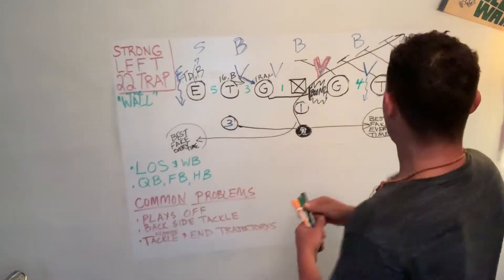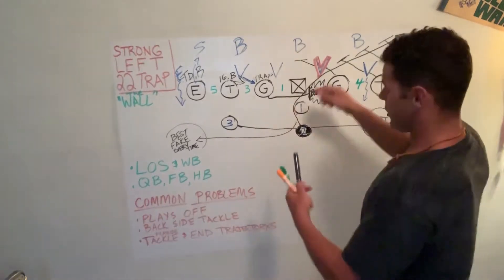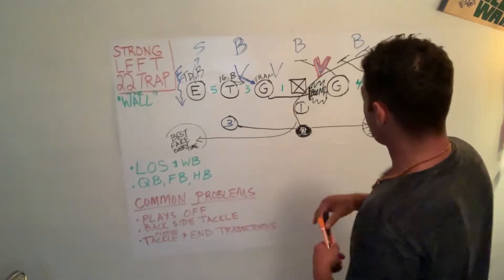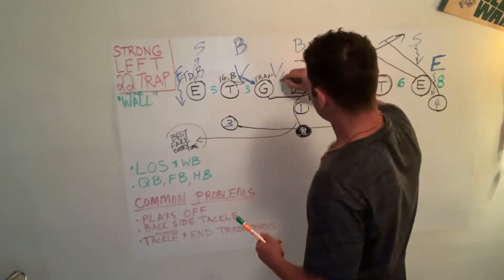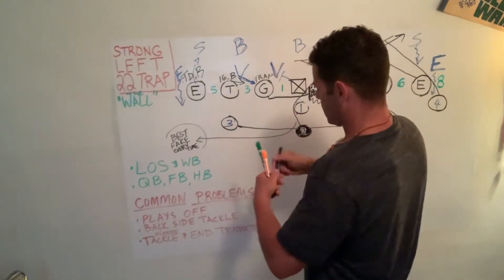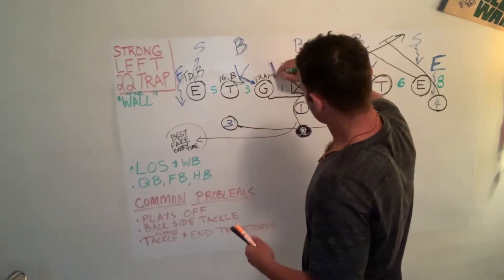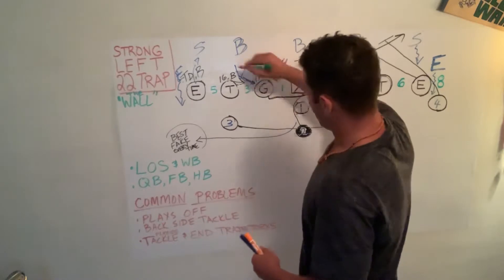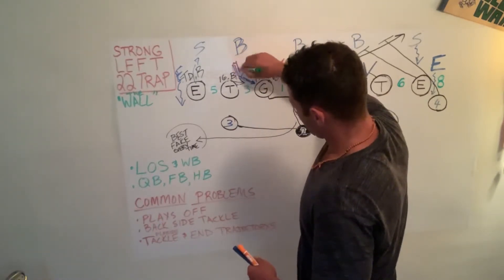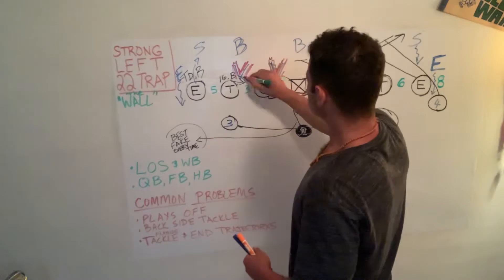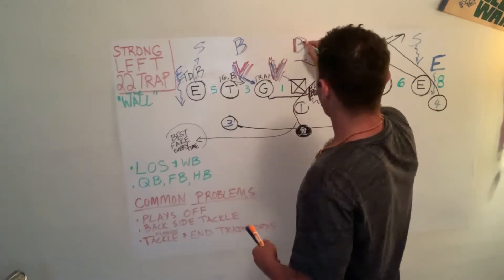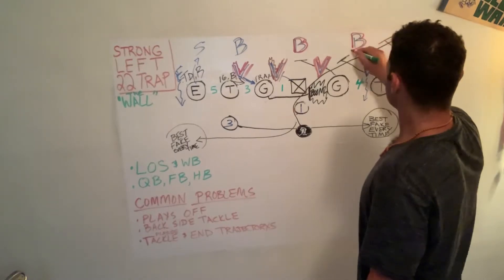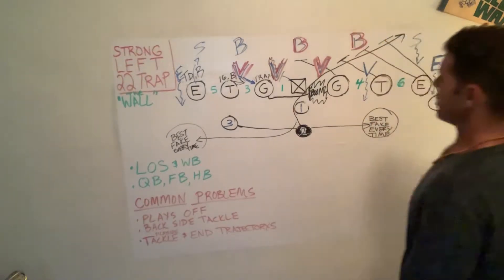I'm going to highlight the people that we're blocking with this red, the way I did the trap. So, he's getting blocked. The center is blocking him. So, he's getting blocked. He's getting blocked. He's getting blocked. First common problem, right? He has to get cut. These backers are getting blocked. These are the guys that are getting caught up in the wall. Look at that. Huh.